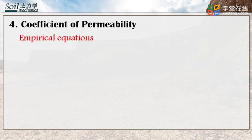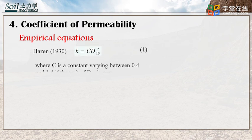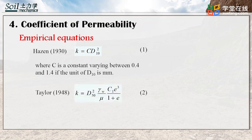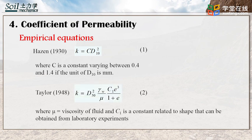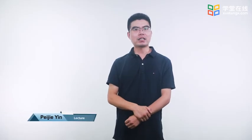Alternatively, the coefficient of permeability can be estimated from empirical equations. For example, Hazen proposed an equation to relate the coefficient of permeability to D10 as equation 1. A more complicated equation is suggested by Taylor, in which the coefficient of permeability is a function of D50 and void ratio as shown in equation 2. In this lecture, we have learned Darcy's law and the methods to obtain the coefficient of permeability. That's all for today's lecture. Thanks for listening.